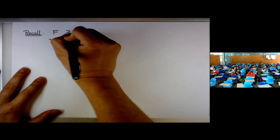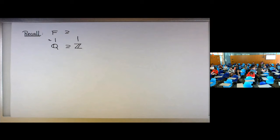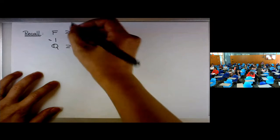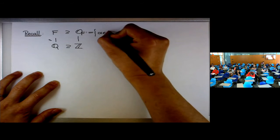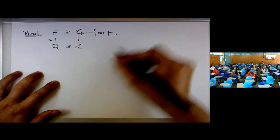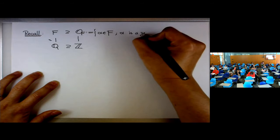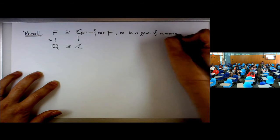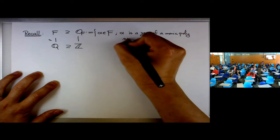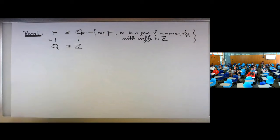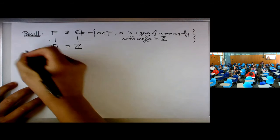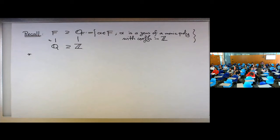The most important concept we introduced last time is the analog of the integers for a general number field, called the ring of integers O_F. It consists of elements alpha in the number field F such that alpha is a zero of a monic polynomial with coefficients in Z. That's the way to define the ring of integers in a general context, and it's independent of the choice of the generator of F over Q.